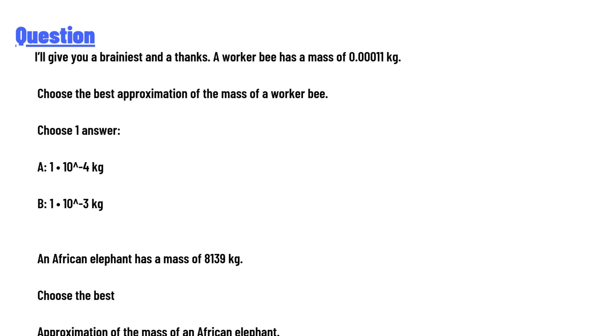I'll give you a brainiest and a thanks. A worker bee has a mass of 0.00011 kg. Choose the best approximation of the mass of a worker bee. Choose 1 answer: A: 1×10^-4 kg, B: 1×10^-3 kg.